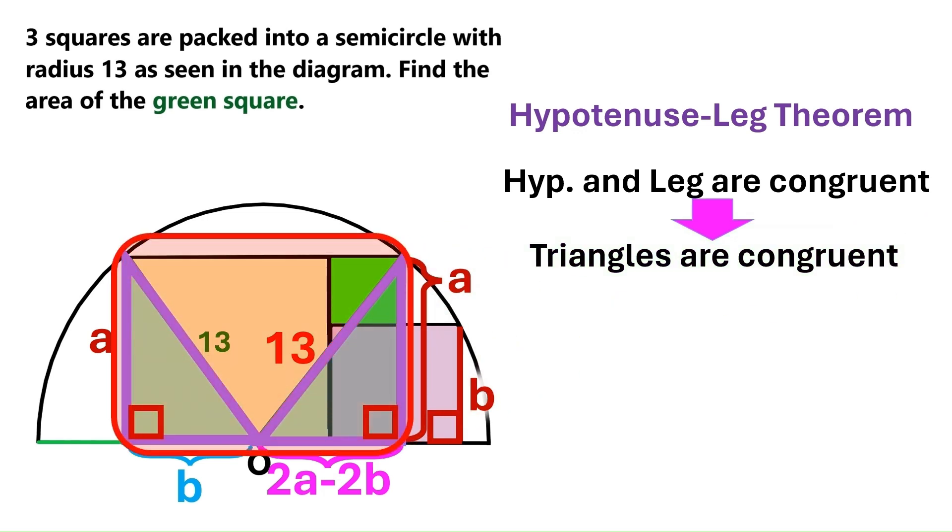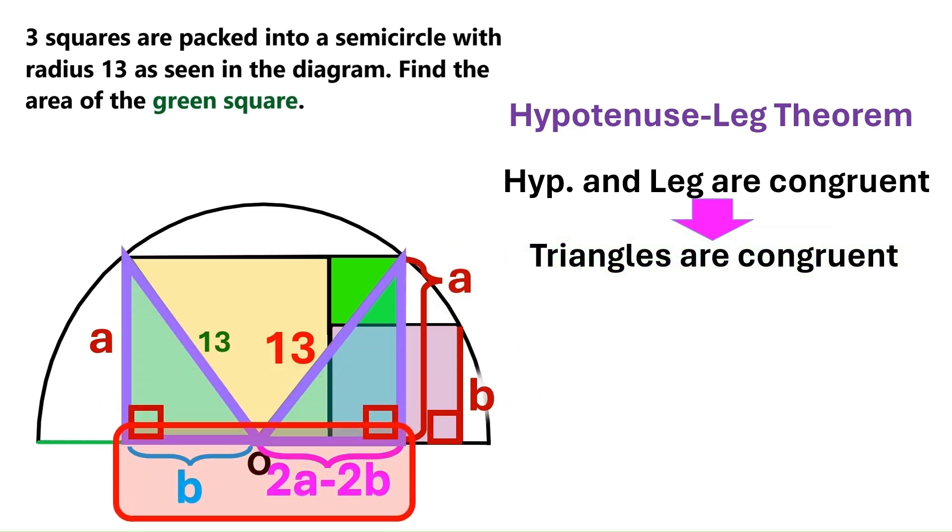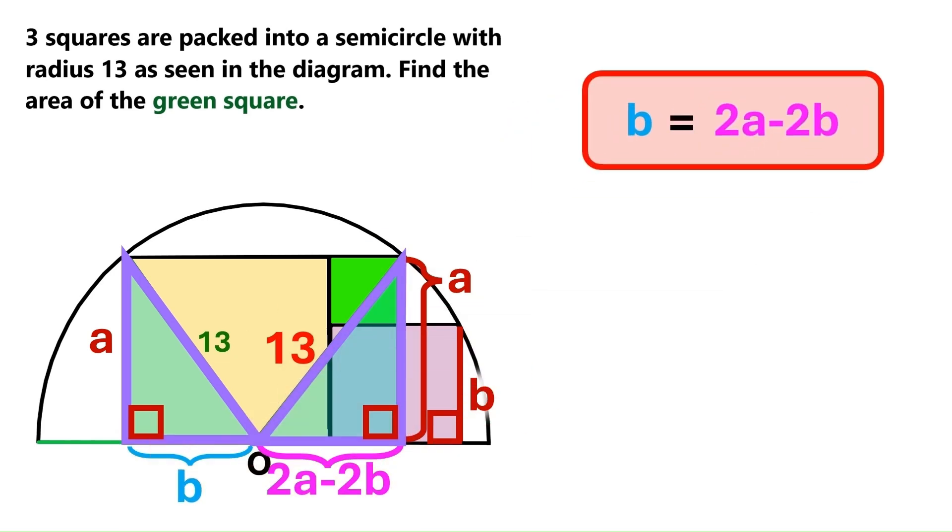And it turns out these two triangles are congruent. So these two sides must also be equal. We can express that as b equals 2a minus 2b.